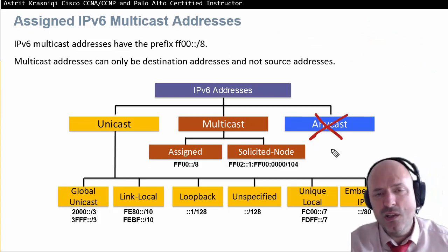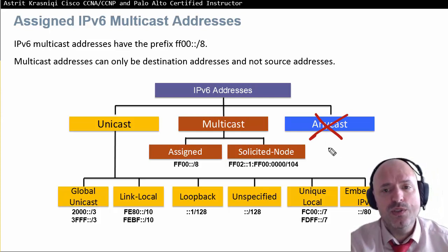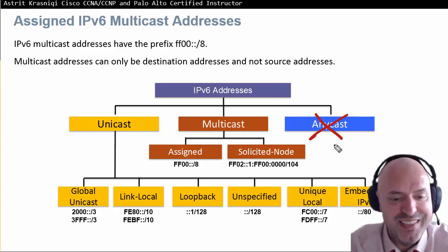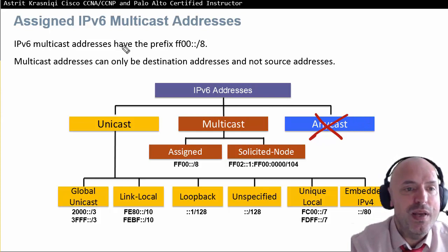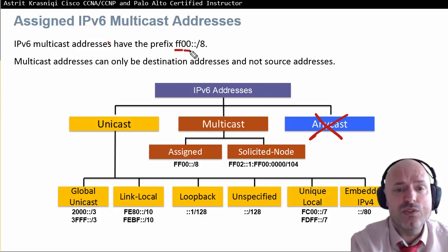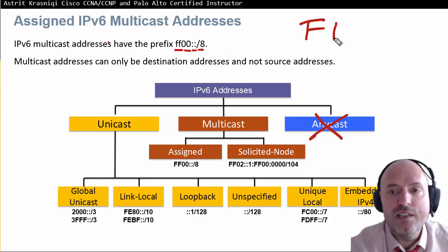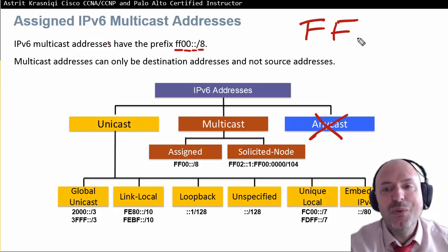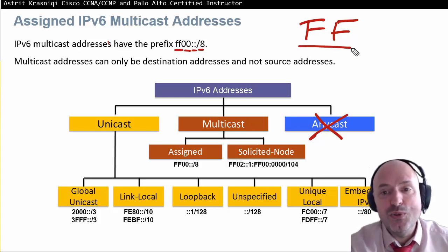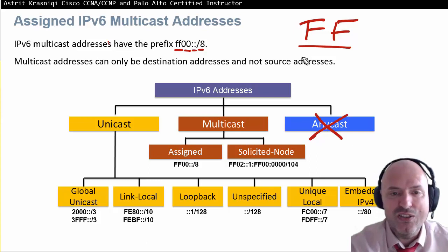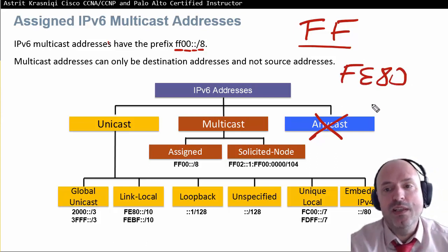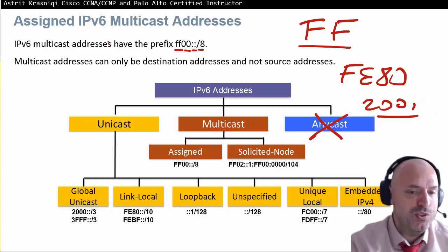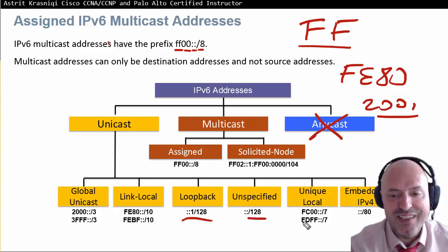We are not going to cover anycast in this course as it's not in the CCNA curriculum. Multicast addresses start with FF00::/8 — pretty much anything you see with FF is a multicast address. On an exam, as soon as you see FF in the front, that's multicast. FE80 would be link-local, and 2001 would be the global unicast address.